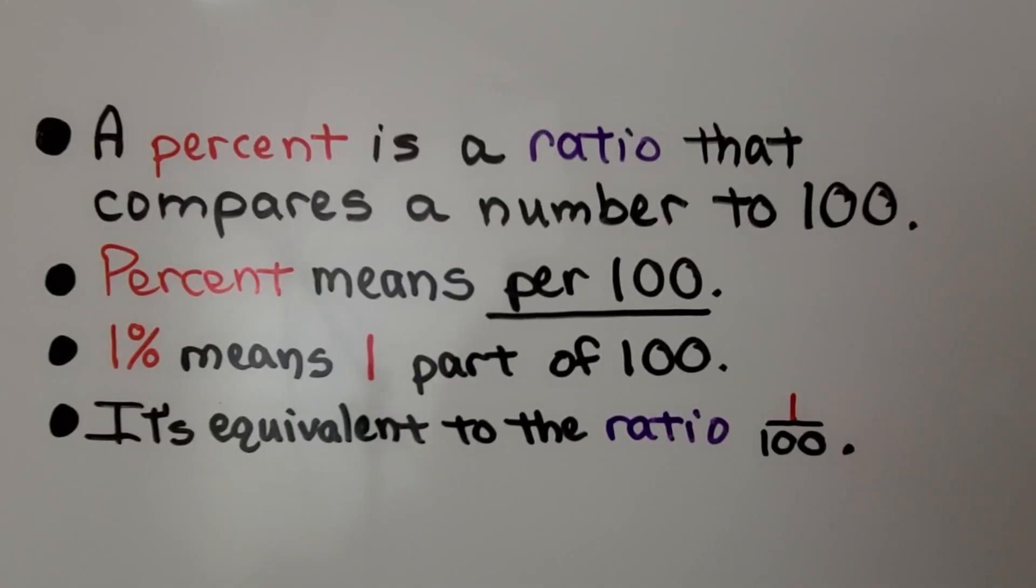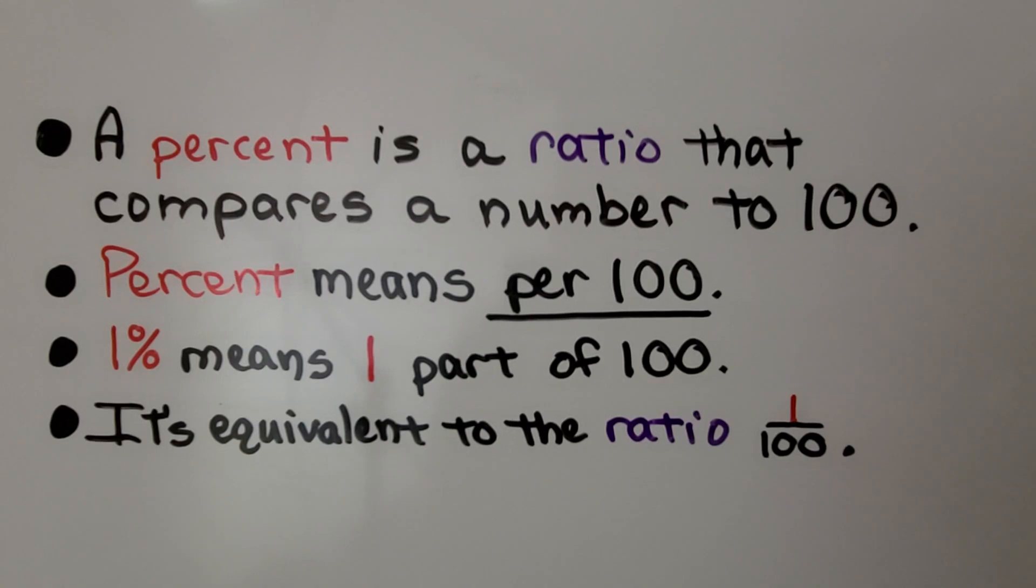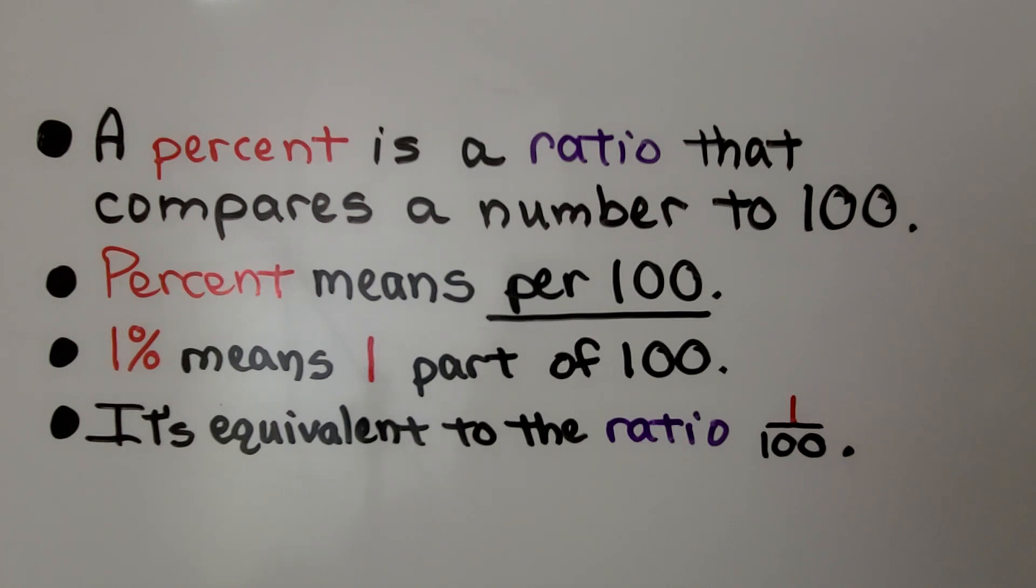A percent is a ratio that compares a number to 100. Percent means per 100. 1% means one part of 100, one out of 100. And it's equivalent to the ratio 1 to 100. We can write that as a fraction as one hundredth.